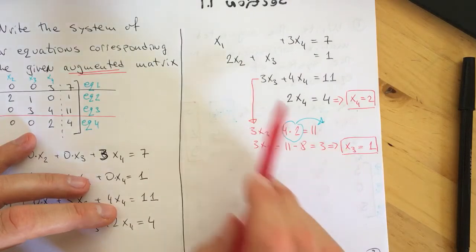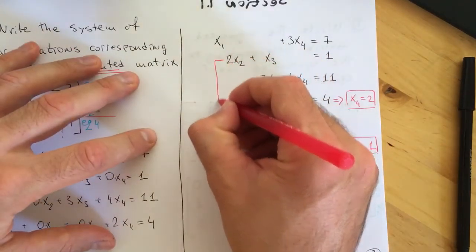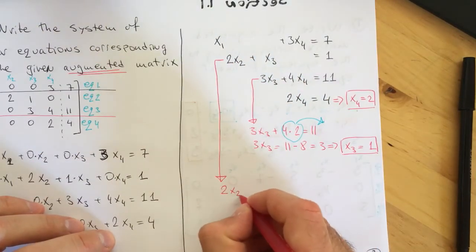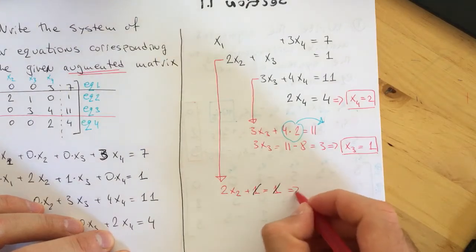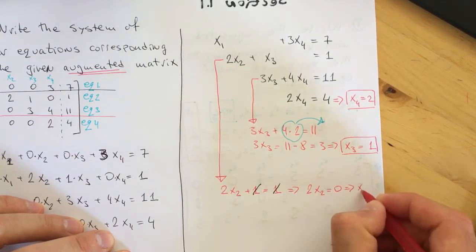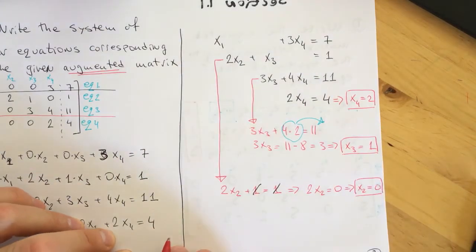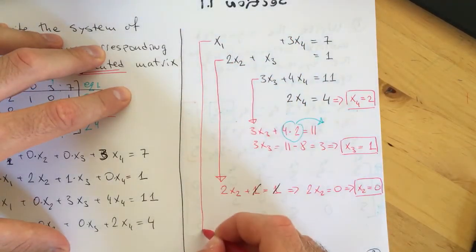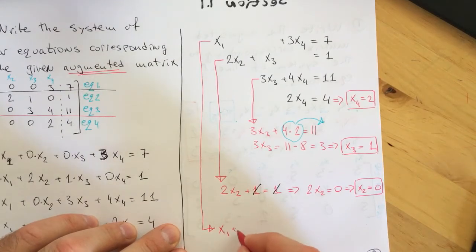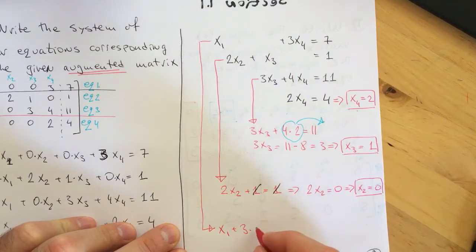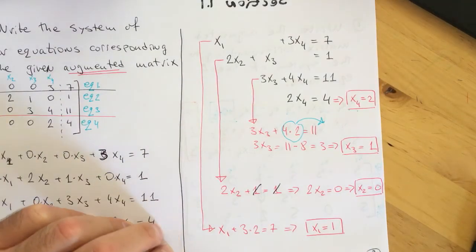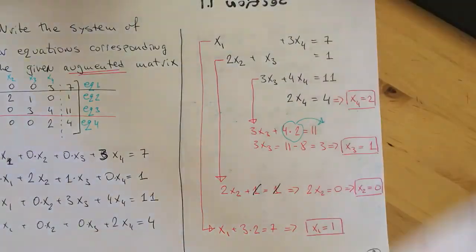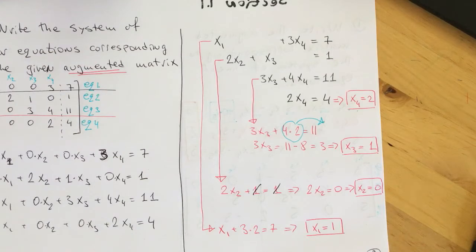Having x3, we can find x2. From the second equation: 2x2 plus 1 equals 1, so 2x2 equals 0, meaning x2 equals 0. Finally, from the first equation: x1 plus 3 times x4 equals 7, so x1 plus 6 equals 7, which gives x1 equals 1. So this system is consistent — it has one unique solution.